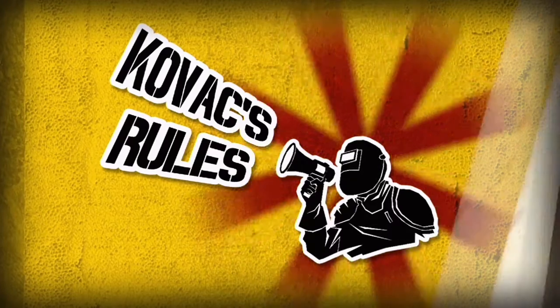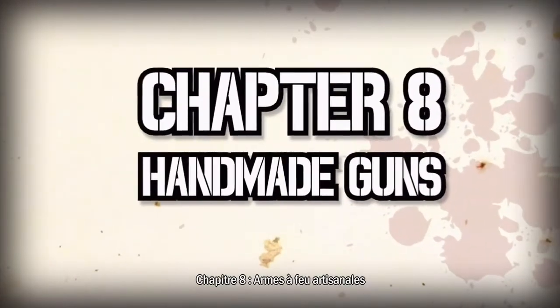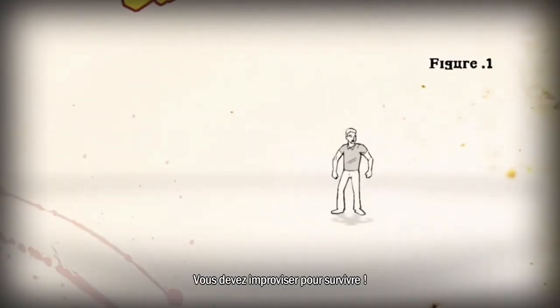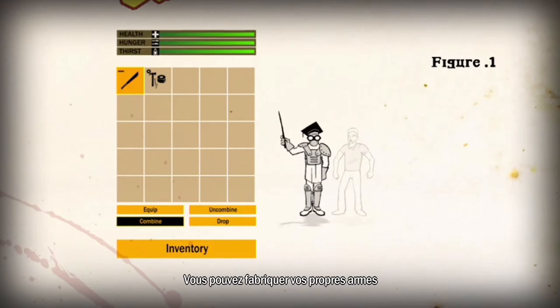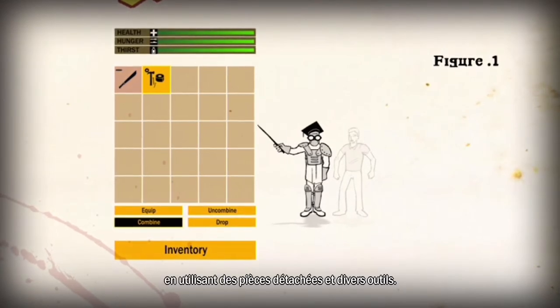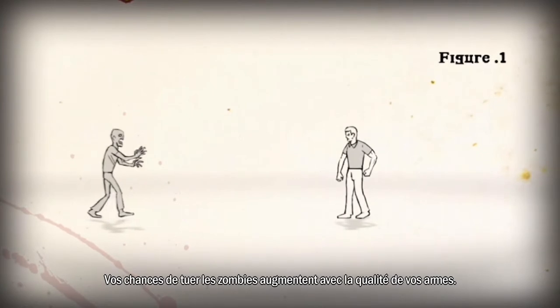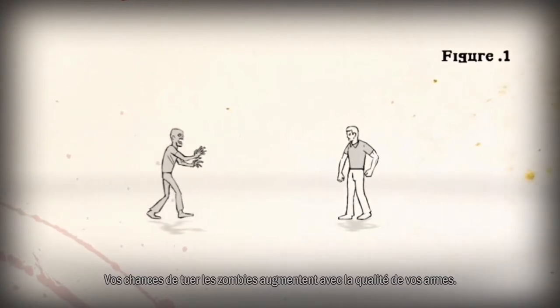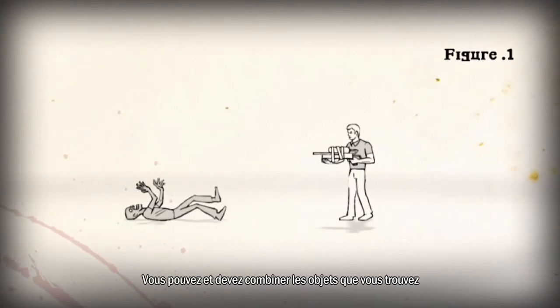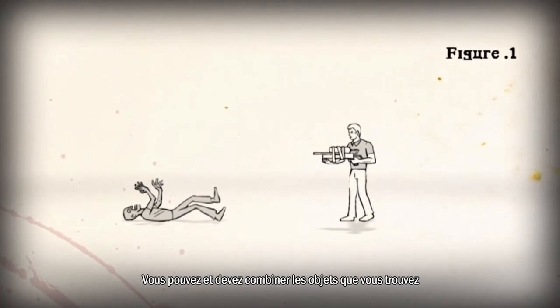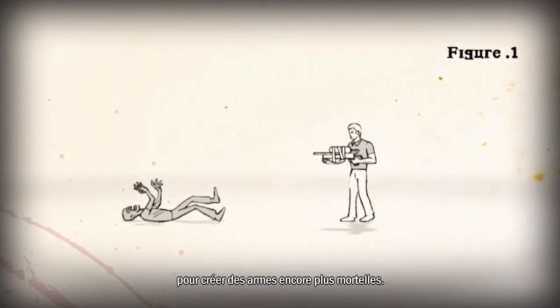Kovacs Rules, Chapter 8: Handmade Guns. You must improvise to survive. It is possible to create your own weapons using spare parts and other tools. The better your weapon, the better your chances of killing the zombies. You can and should combine found objects to create deadlier weapons.